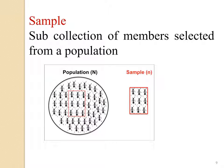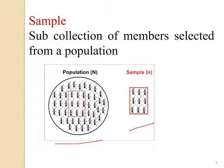A sample is a sub-collection of members selected from a population. We randomly choose the sample from the population, so the sample is a subset of the population. We denote population size as capital N and sample size as lowercase n. The population definition and sample definition are very important.